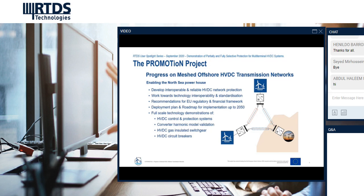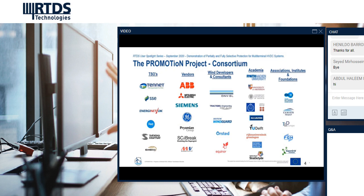The Promotion project is a European Union Horizon 2020 project looking towards progress on meshed offshore HVDC transmission networks. Within that, we have several technical work packages looking towards interoperable and reliable HVDC network protection, technology interoperability and standardization, regulatory and financial aspects of HVDC systems, and a roadmap for implementation. As demonstrators, we have full-scale demonstrations of HVDC control and protection, converter harmonic model evaluation, HVDC GIS, and HVDC circuit breakers. We have a wide range of project partners from all over Europe, including TSOs, HVDC vendors, developers and consultants, academia, and other associations.